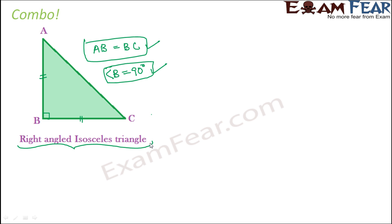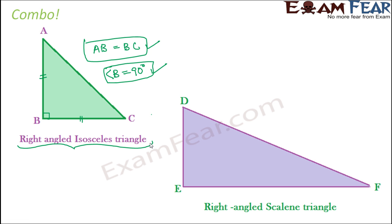So we can have these kinds of combos where, depending on the sides, we can say whether it is scalene, isosceles, or equilateral, and depending on the angle, we can say whether it is acute, right, or obtuse. But not all combinations are possible. This other triangle is also a right angled triangle because we have a 90 degree here, but all three sides are unequal, so this is a right angled scalene triangle.